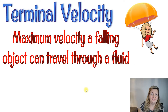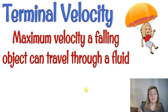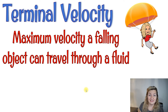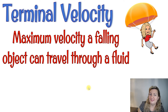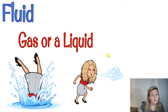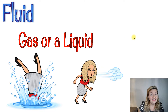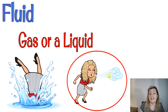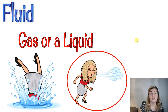You feel this drag force, or this air resistance, shoot upward while gravity is still pulling you down. So let's first look at the definition of terminal velocity. Terminal velocity is the maximum velocity a falling object can travel through a fluid — in other words, the fastest speed it can obtain while traveling through a fluid. A fluid is going to be a gas or a liquid. In this case, when we're talking about skydiving, we're really talking about air and air resistance and that drag.